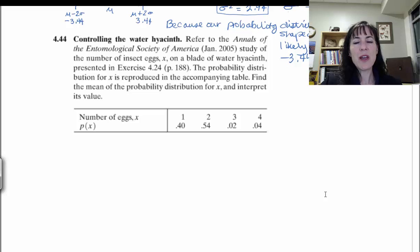Let's look at 4.44, it's another problem, and this one is controlling the water hyacinth. We're looking at the number of insect eggs as our x, so that's what we're measuring. That's from a blade of water hyacinth, so I'm guessing that's like the leaf structure, and the probability distribution for x is reproduced below.